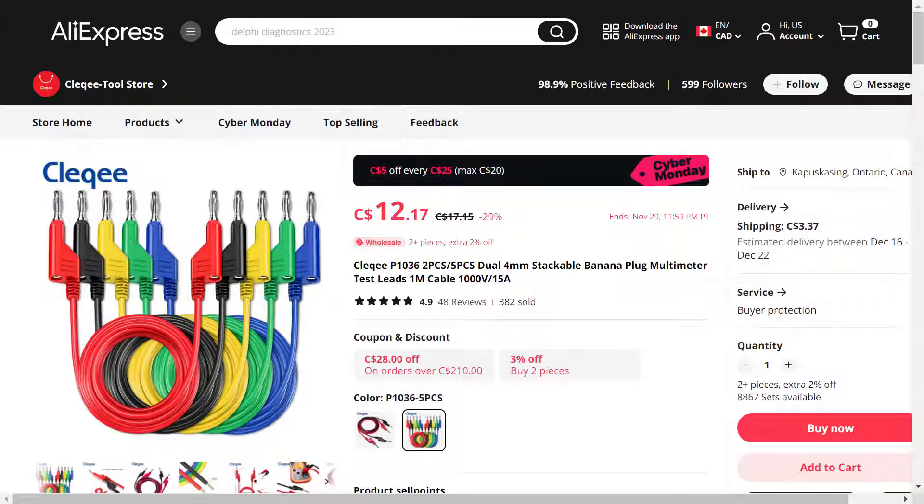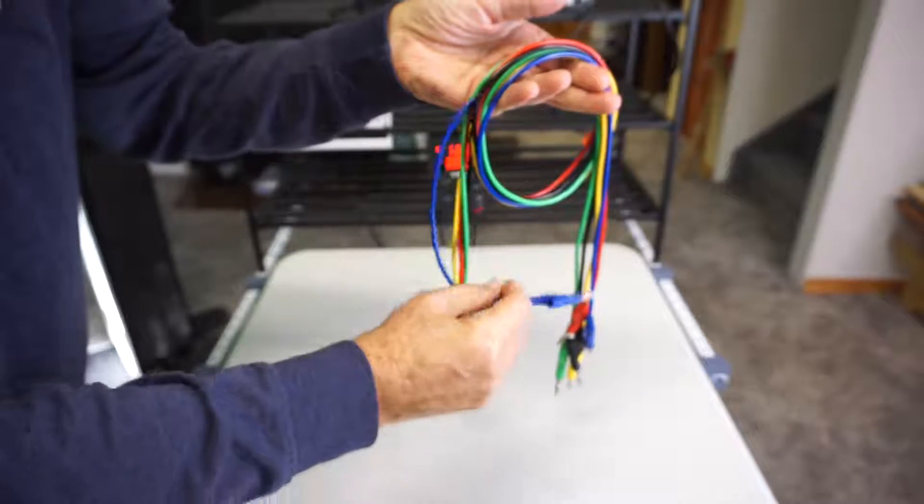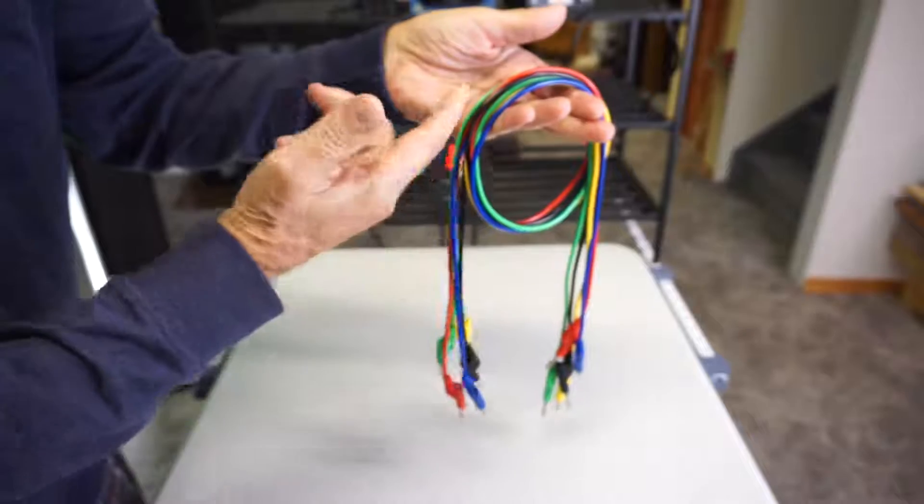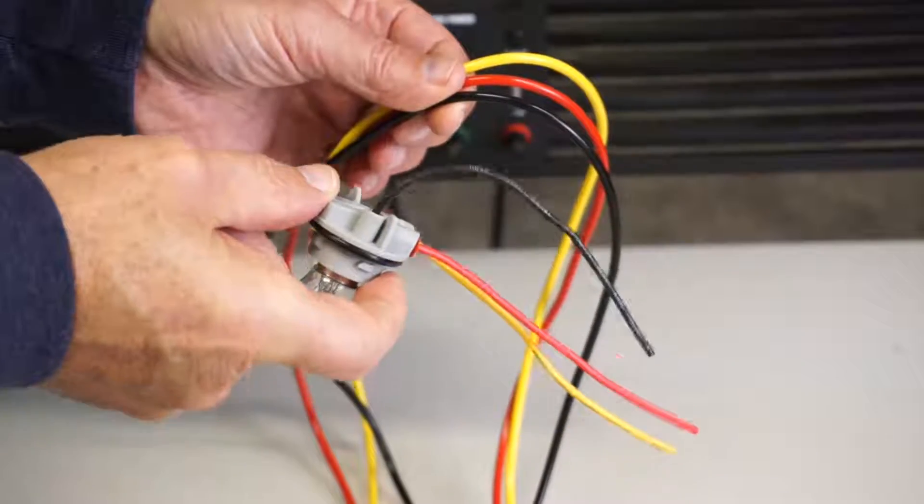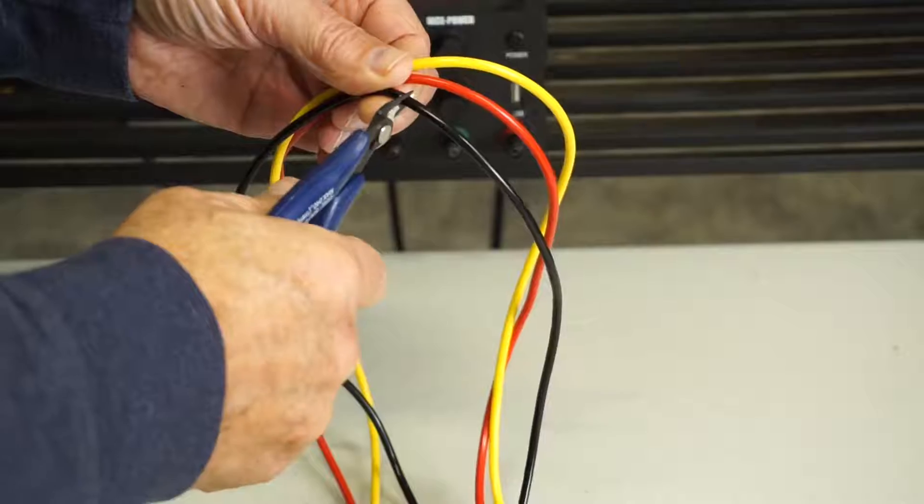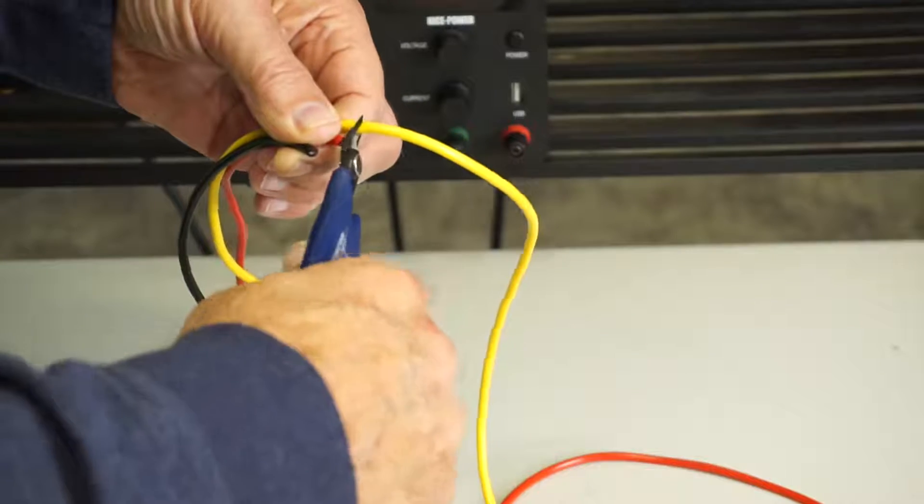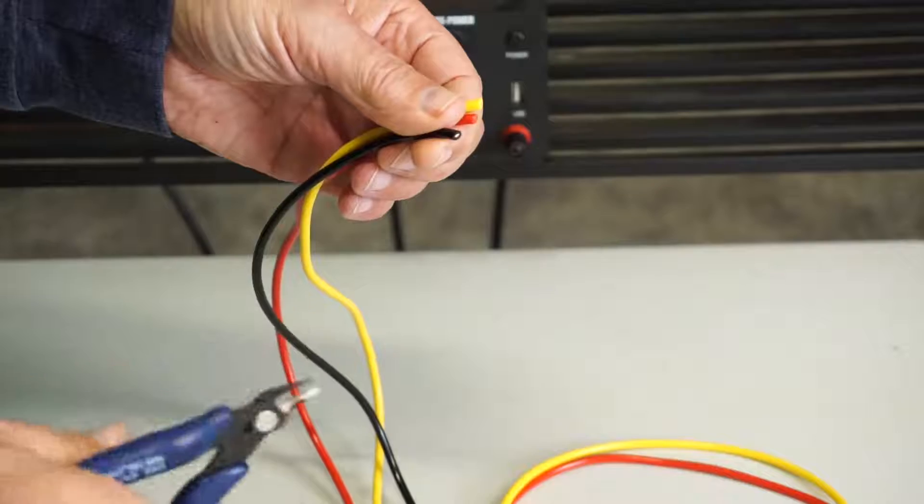Also on Aliexpress are these cables. Set of five. They come with these nice stackable banana plugs. Colorful things. And bonus, three of those colors match exactly the color of the pigtails. Cut them in half. And we have enough for two sets of test lights.